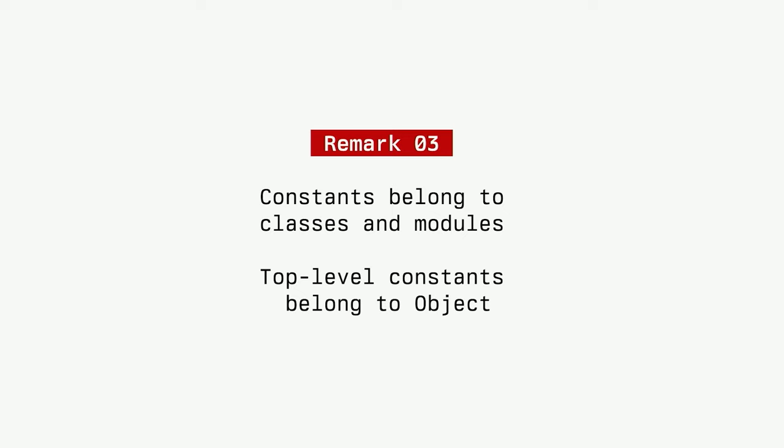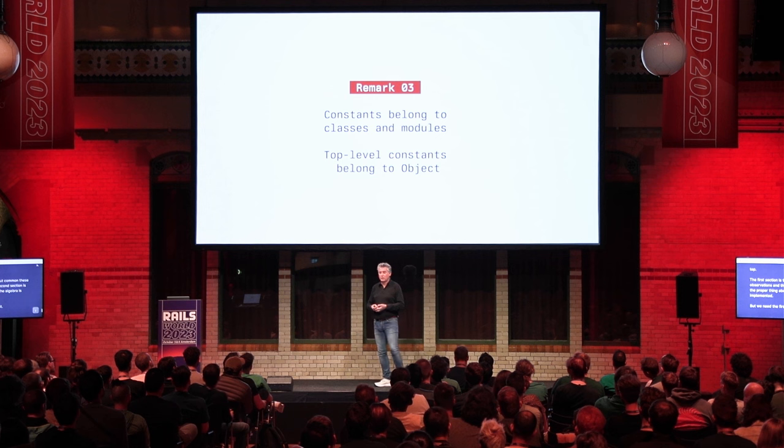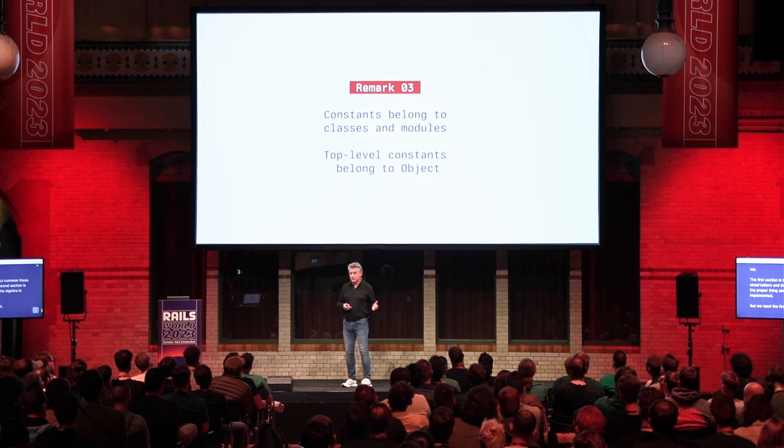The next remark: constants belong to class and module objects, and this is the way Ruby emulates the concept of a namespace. Class and module objects have internally — you can think of it conceptually as — a hash table, a constant table that maps constant names to their values. Top-level constants are stored in Object.